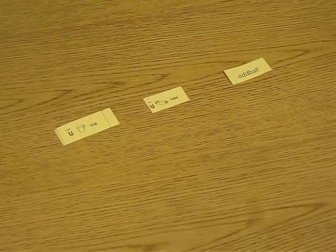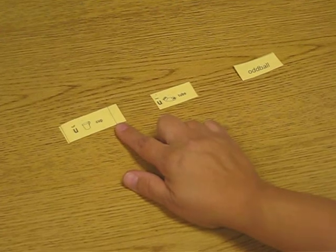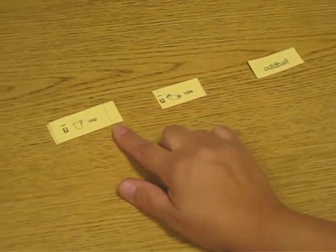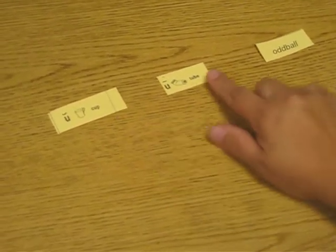Okay, this is the H10 word sort. The columns we have are the short U sound like in cup, the long U sound like in tube, and our oddball.